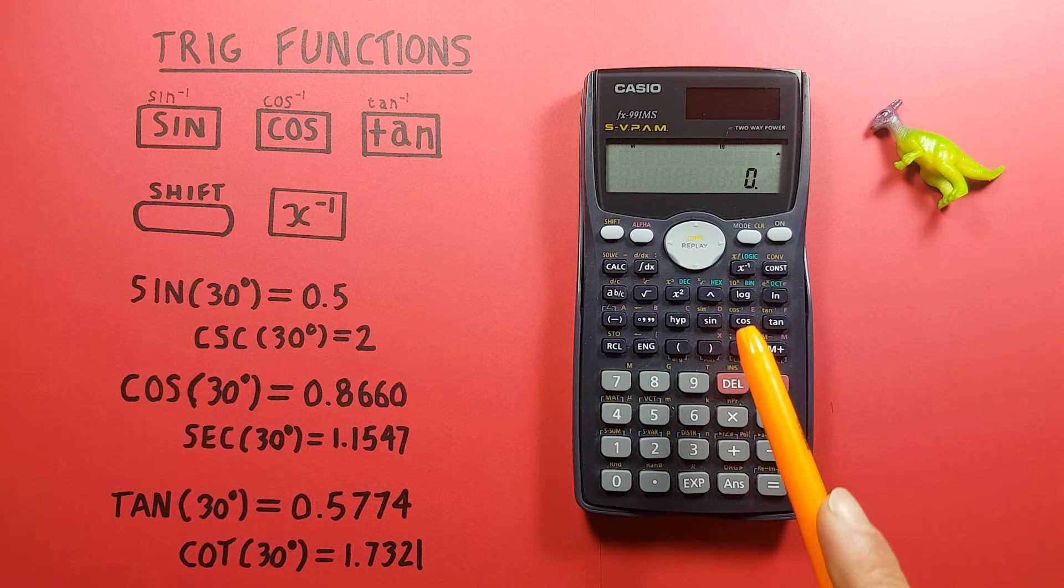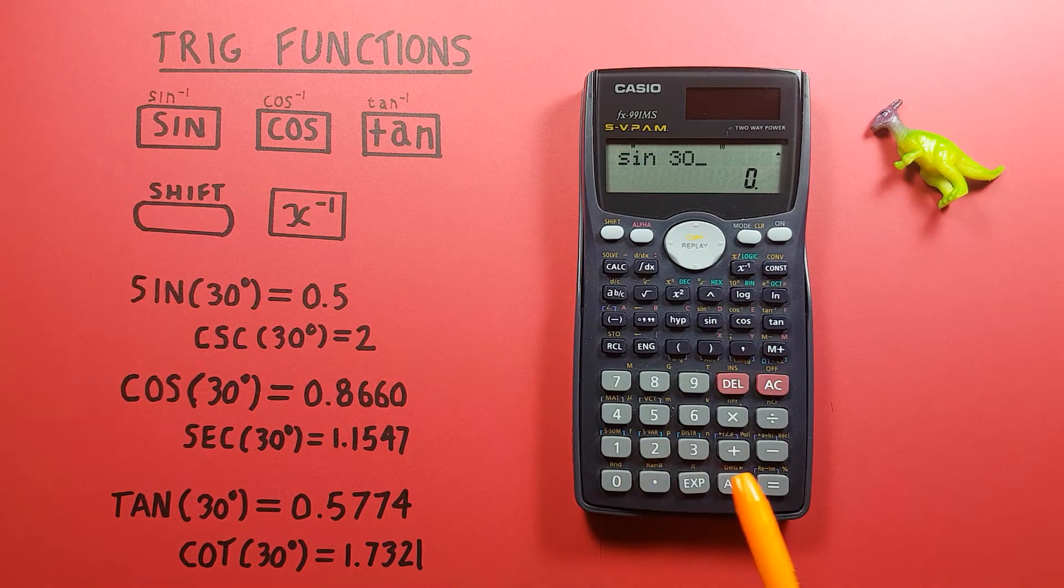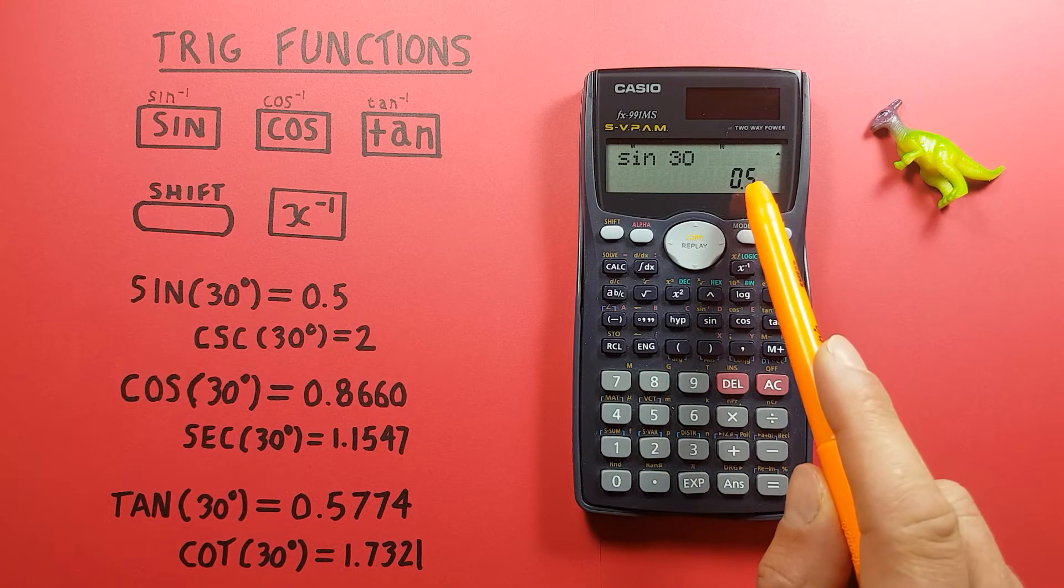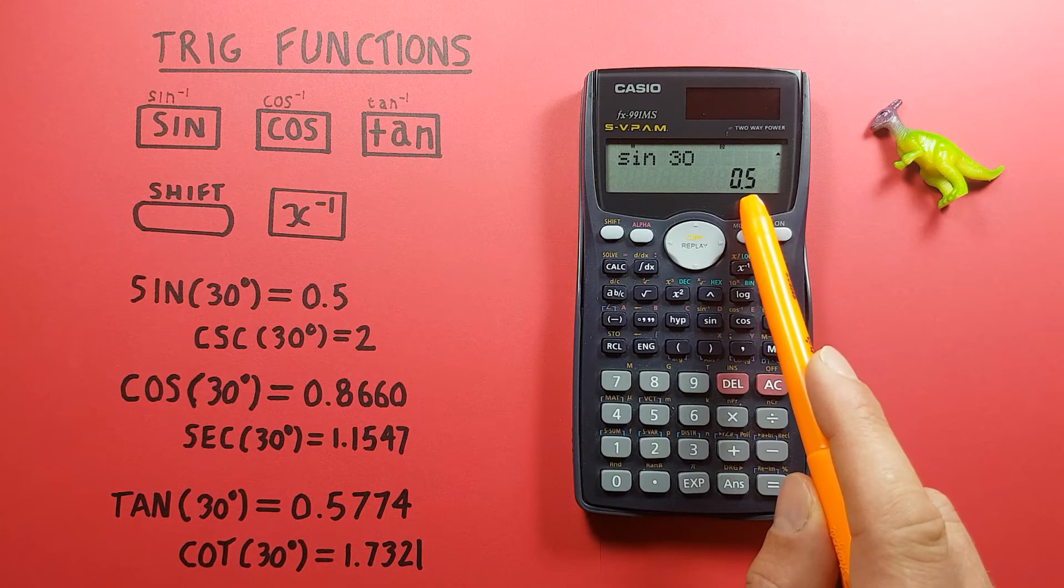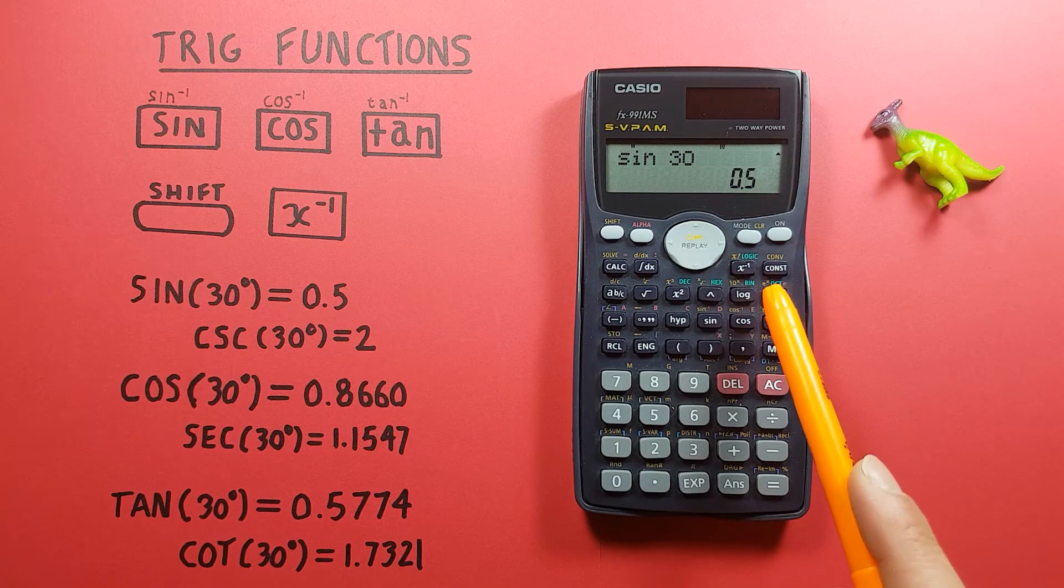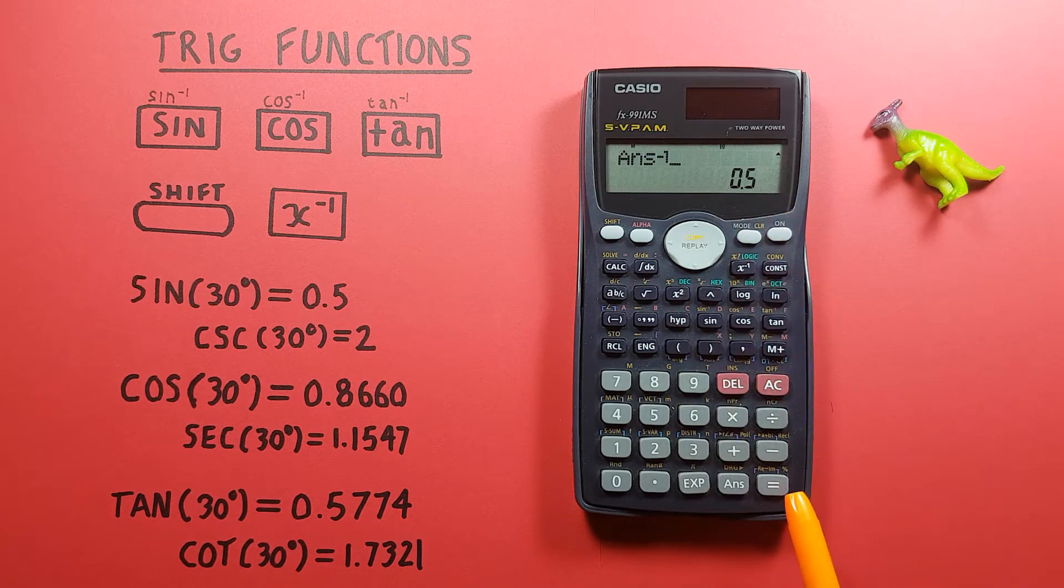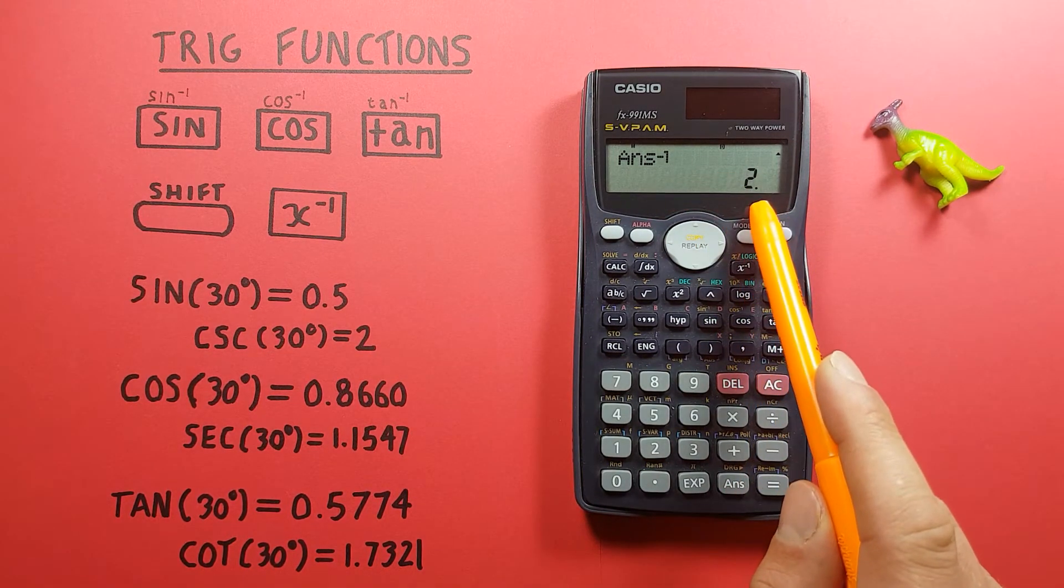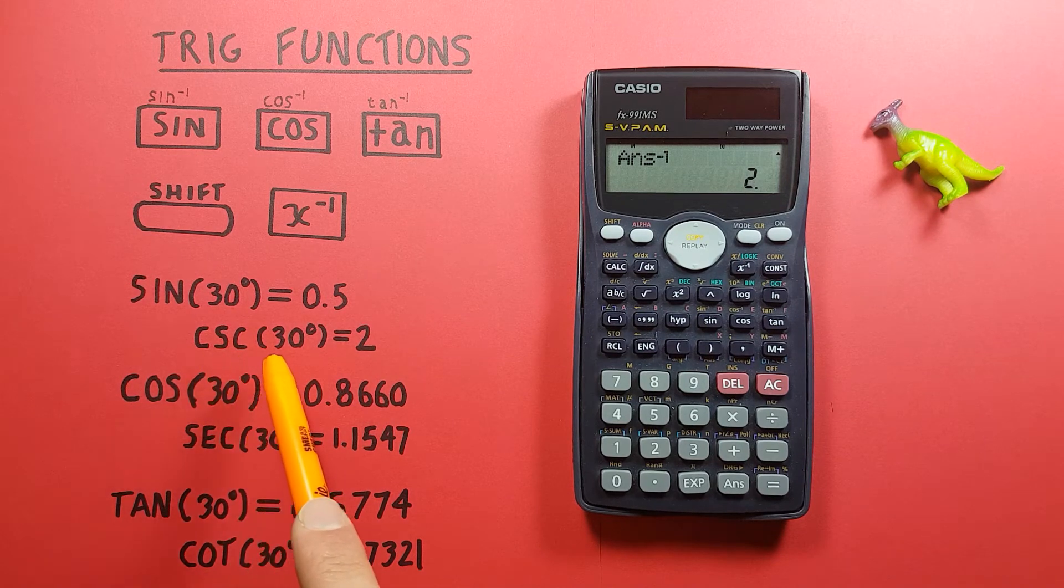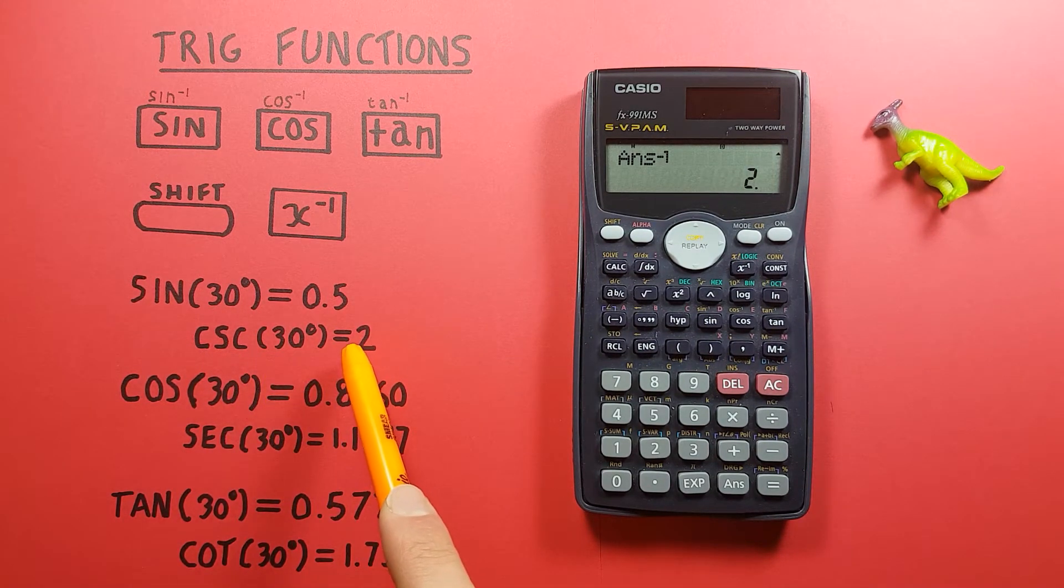So if we wanted to find the cosecant of 30 degrees, first we have to find the sine of 30, sine 30 press equals and we're back to our 0.5, and then we want to inverse this with the x to the power negative 1 or x inverse key and press equals and we see we get 2. The cosecant of 30 degrees is equal to 2.